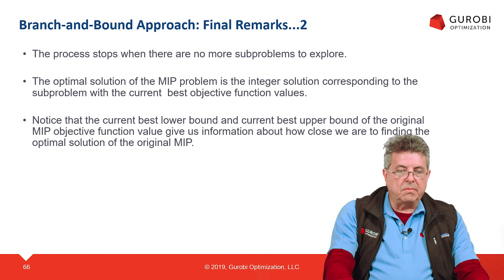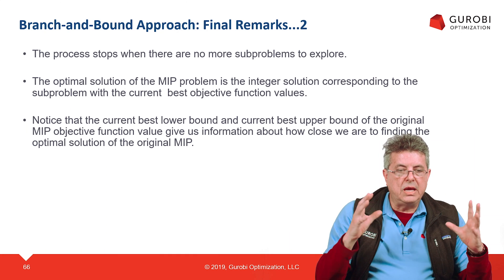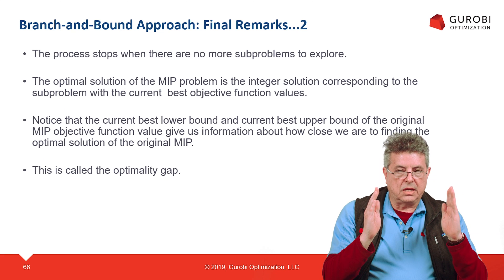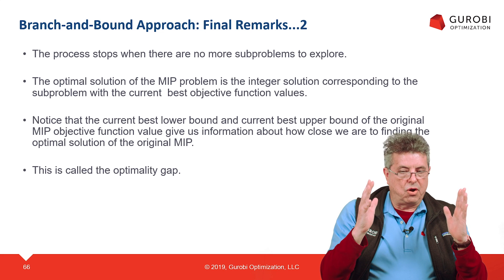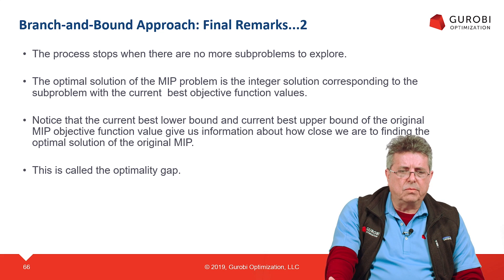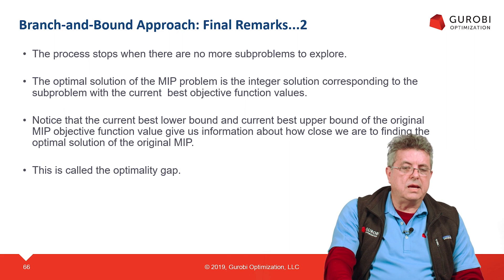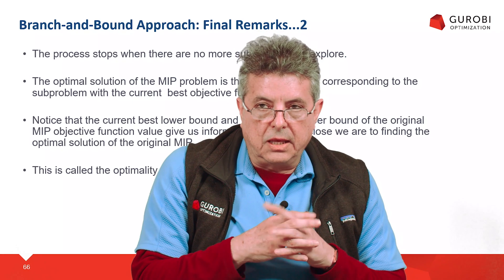During branch and bound, the current best lower bound and best upper bound give us information about how close we are to the optimal solution of the original MIP. This information is called the gap — it tells you how far you are from the optimal solution. In practice, you may not need the optimal solution; a solution within 5% of optimal may be good enough. This allows us to find very good solutions quickly without necessarily reaching optimality.